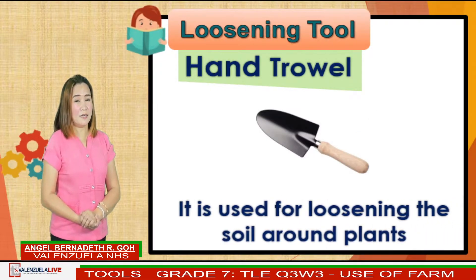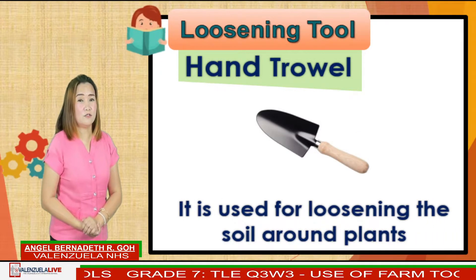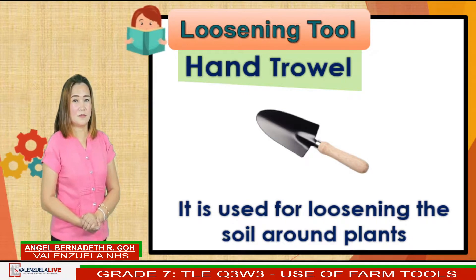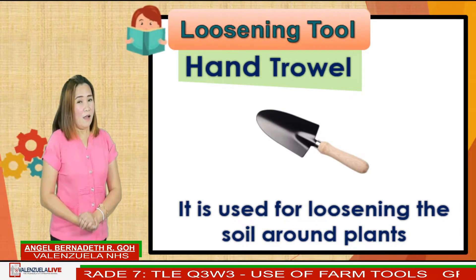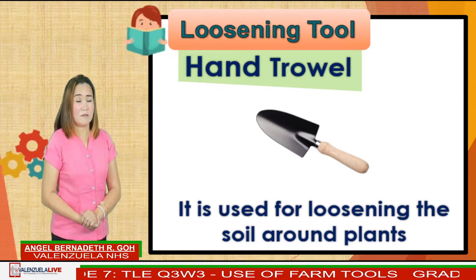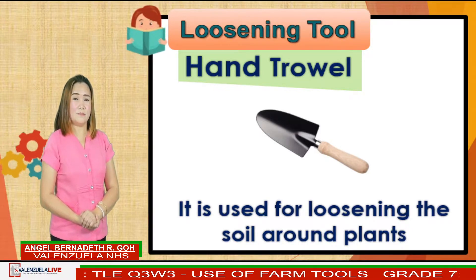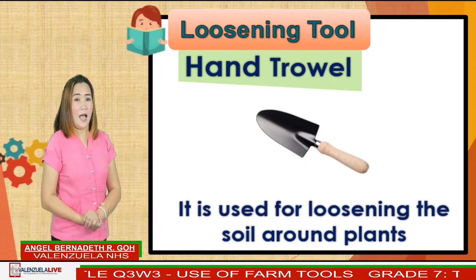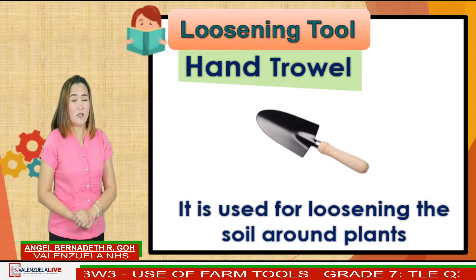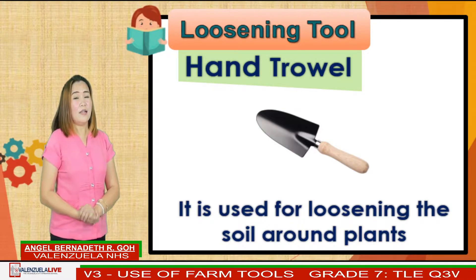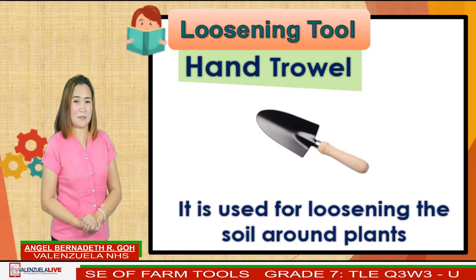Next is the loosening tool. The hand trowel is a loosening tool used for loosening the soil around plants.